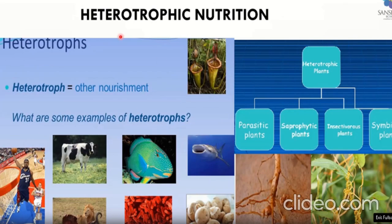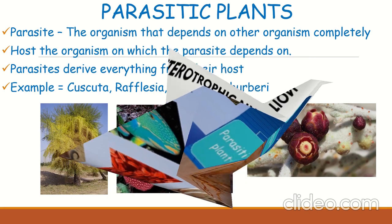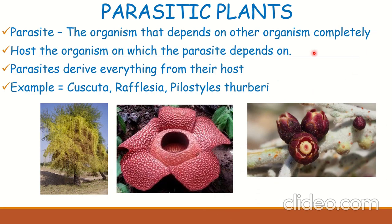As you can see, these are the normal heterotrophs, but plants can also be heterotrophs. First up is parasitic plants. A parasite is an organism that depends on another organism completely. When you hear the word parasite, what comes to mind is probably a mosquito — mosquitoes are the commonly known parasite because they are completely dependent on human blood. They suck your blood and are really irritating. So a parasite is an organism that completely depends on another organism.